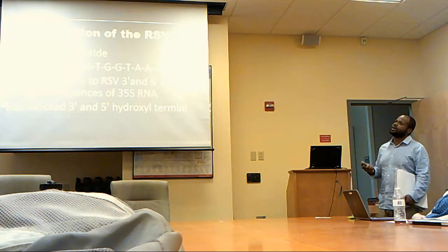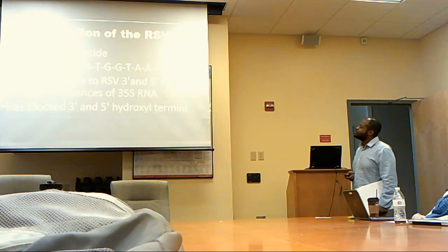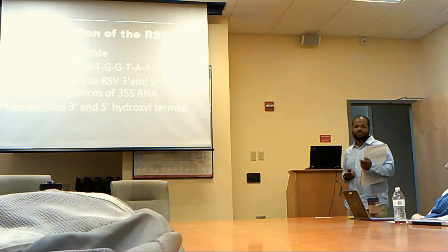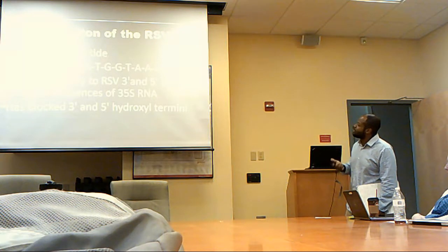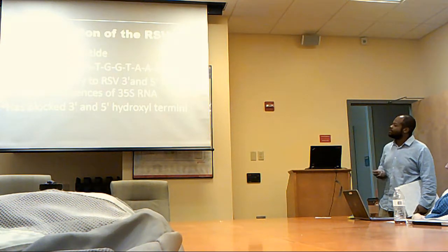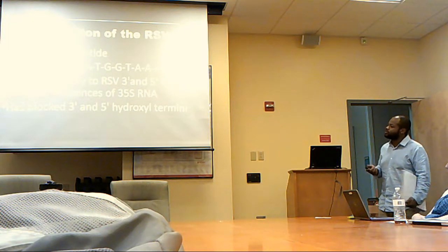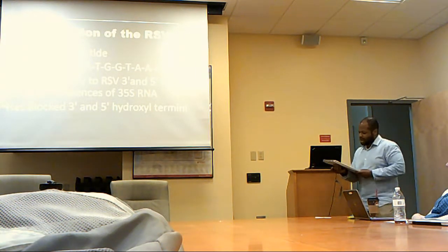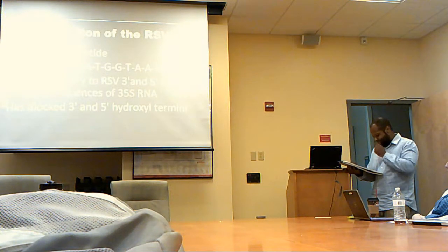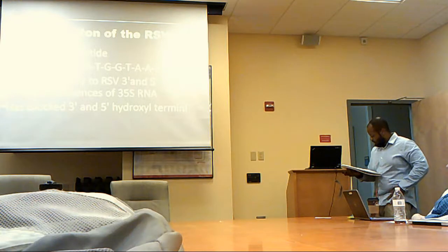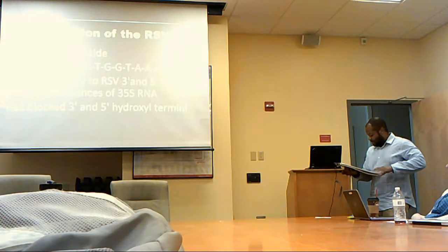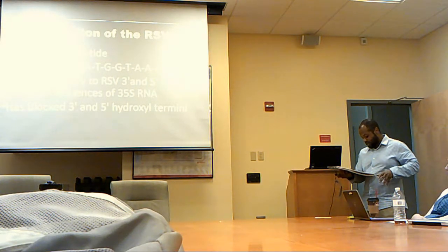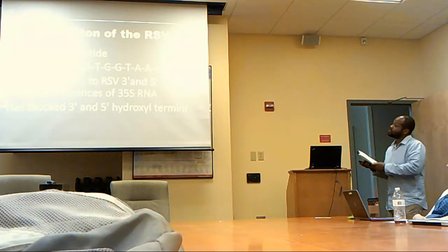Inhibition of the Rous sarcoma virus — how do we stop it? Using oligodeoxynucleotides, which are short sequences of DNA. They are complementary to RSV at the three-prime and five-prime reiterated terminal sequences of 35S RNA. They block three-prime and five-prime hydroxyl termini. Using chick embryo fibroblast tissue cultures infected with Rous sarcoma virus, they added oligodeoxynucleotides. These hybridized at the three-prime and five-prime regions, disrupting circularization of the proviral DNA intermediate and the initiation of translation. That's how you turn it off.